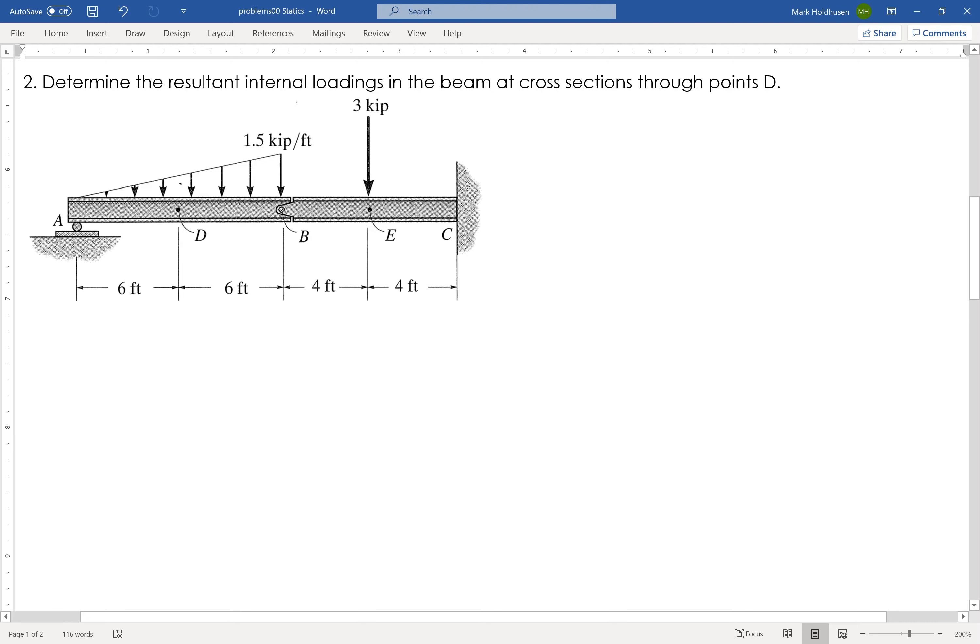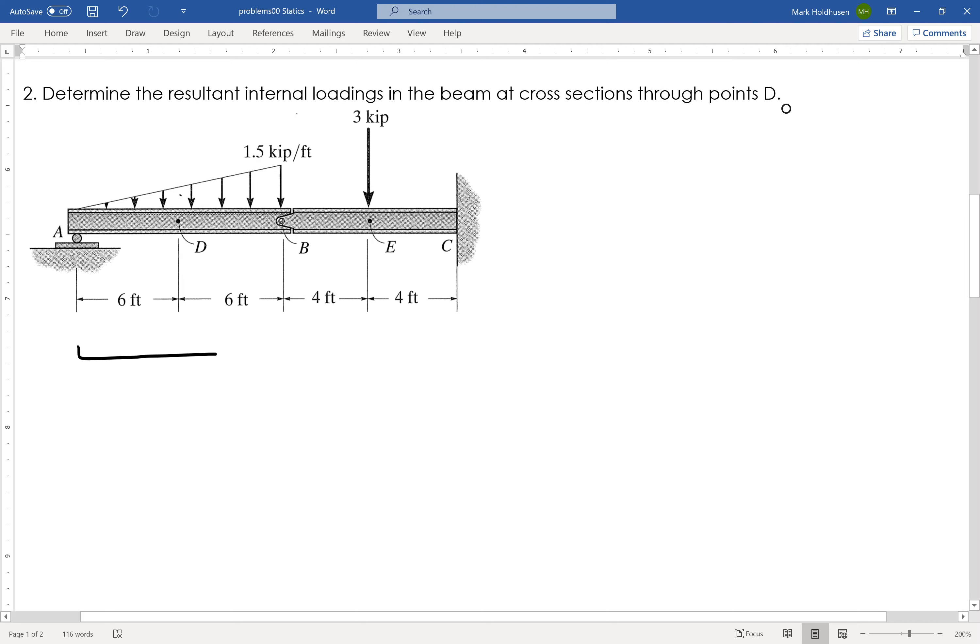Okay, so in this problem I want to find the internal loadings at point D, as shown here. Now, the first thing I need to do is go through and figure out the reactions, right? So I've got a roller at A, pin at B, and then I've fixed over at C.